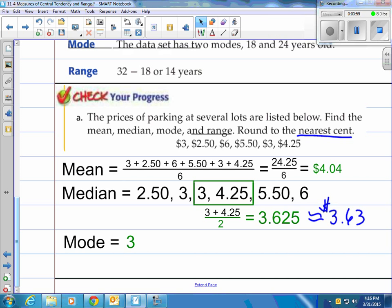Three dollars and 63 cents. How about mode? That's just going to be three dollars, because it's the one that shows up the most. And the range is going to be six minus two fifty, which is three fifty.